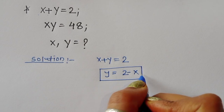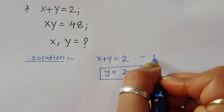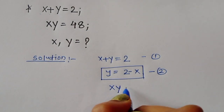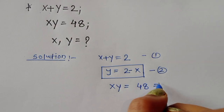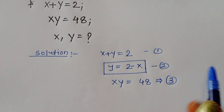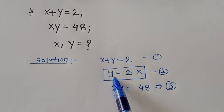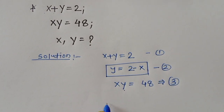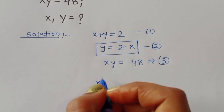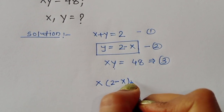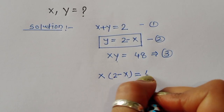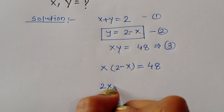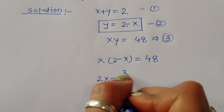Equation 3 is xy equal to 48. Now we substitute equation 2 into equation 3. The value of y from equation 2 is 2 minus x, so we write x times (2 minus x) equal to 48. Expanding gives 2x minus x squared equal to 48.